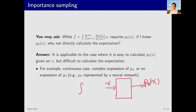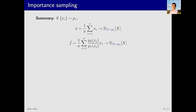When would we use a neural network to represent a distribution? In reinforcement learning, the policy pi_theta is usually represented as a neural network where theta represents the network parameters. Given a state s and an action a, this neural network outputs the corresponding probability. This is exactly the scenario where importance sampling becomes necessary.